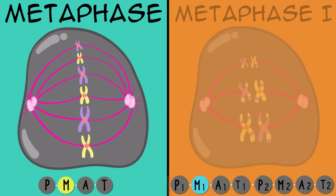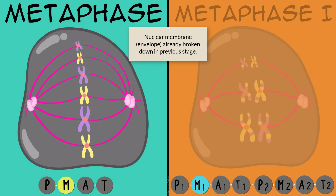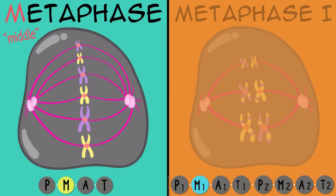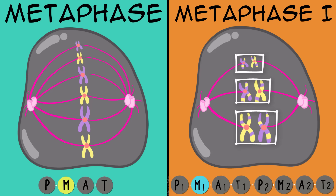Metaphase in mitosis: the nuclear envelope, which had surrounded the nucleus, was already disassembled before metaphase even started. I like to remember the M for middle, because in this stage the chromosomes line up in the middle of the cell in a single file line. Metaphase 1 in meiosis: the chromosomes are in the middle as well, but they're still going to be in pairs in the middle of the cell, so it's not a single file line.